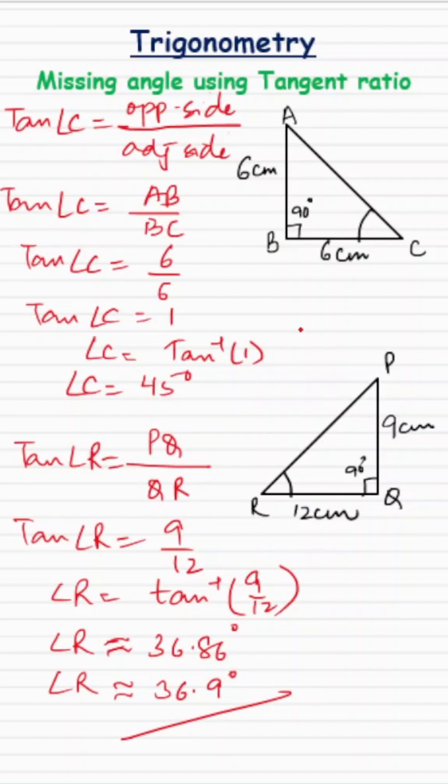So whenever you know two sides, use the inverse function to find the missing angle. That's all. Bye-bye. See you in the next one.